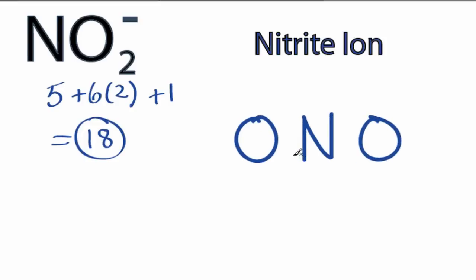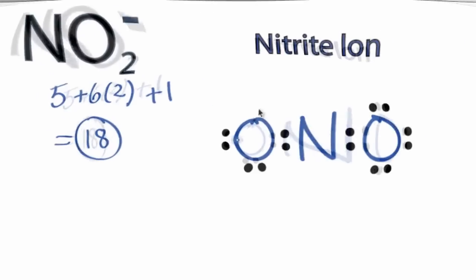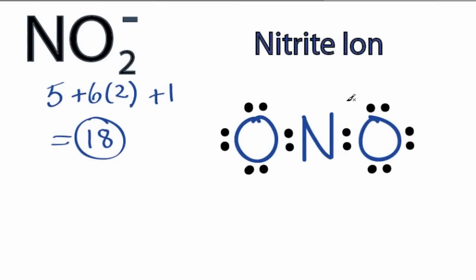We have a total of 18 valence electrons, we'll put 2 between atoms to form chemical bonds, we've used 4, then around the oxygen atoms, 6, 16, and then back to the central nitrogen, 18.